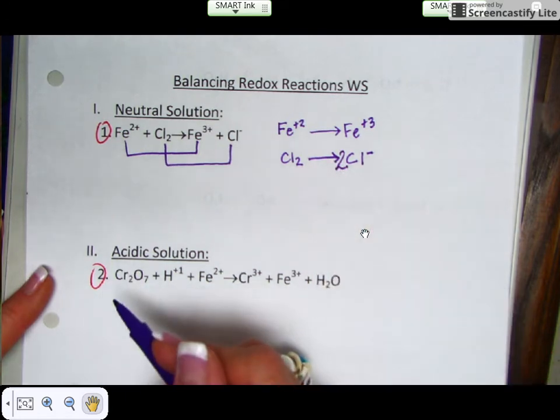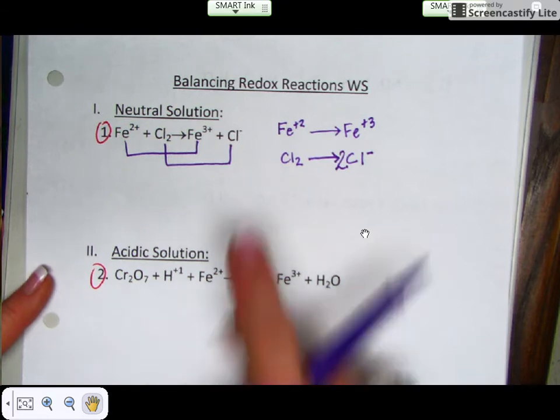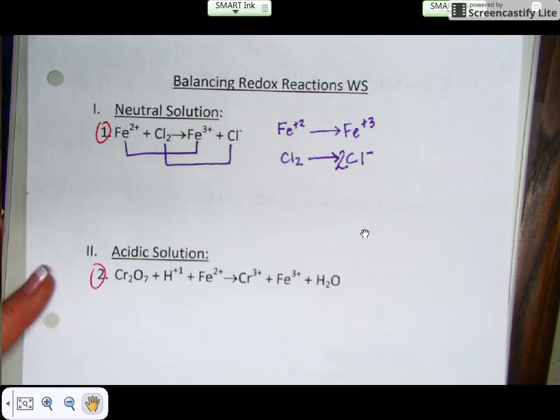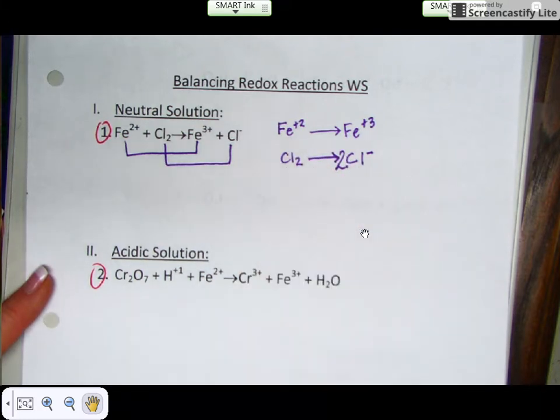The next step in balancing the redox reaction is to balance your oxygens with waters. Well, there are no oxygens in either half reaction, so you just skip that step. Next, you would balance any hydrogens with hydrogen ions. There are no hydrogens, so you skip that step.